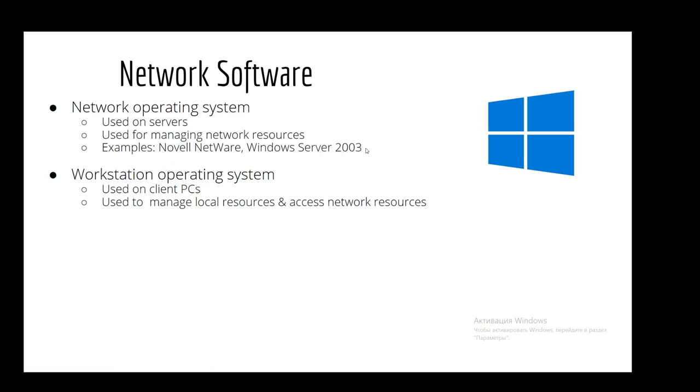So now let's talk about network software. The network software has two main functions. First, it's network operating system. This network operating system is used on servers. Also, it's used for managing network resources. Examples of network software can be Novell NetWare, Windows. Next, it's workstation operating system. Actually, they are used on clients' personal computers, and they are used to manage local resources and access network resources.